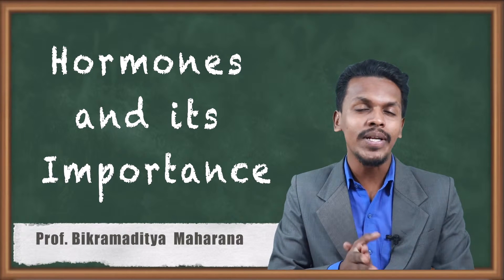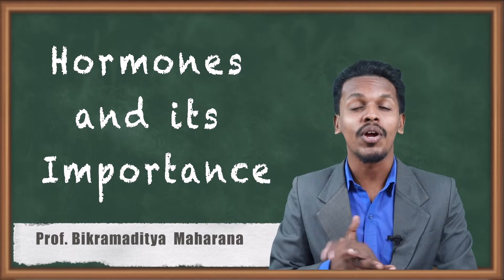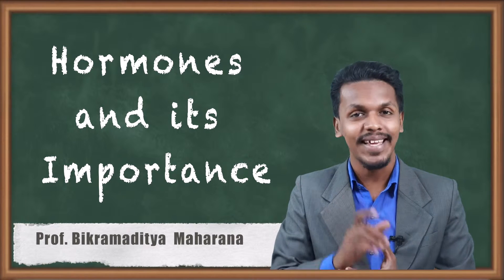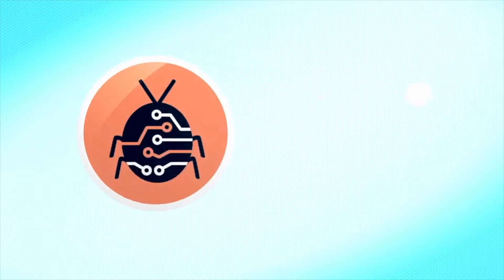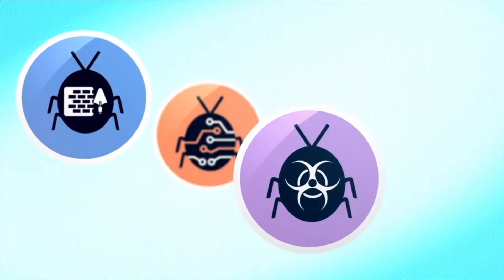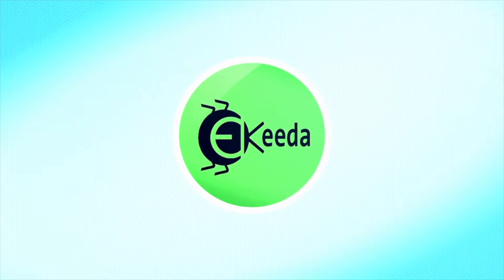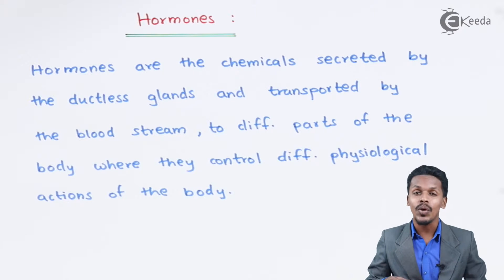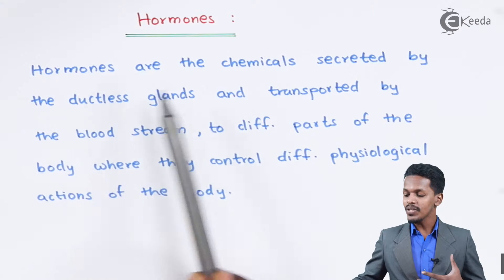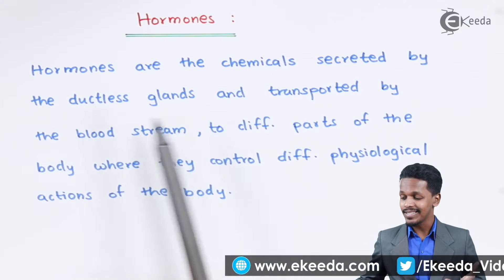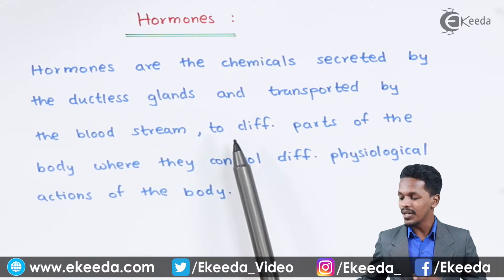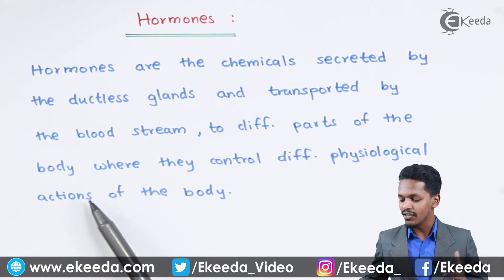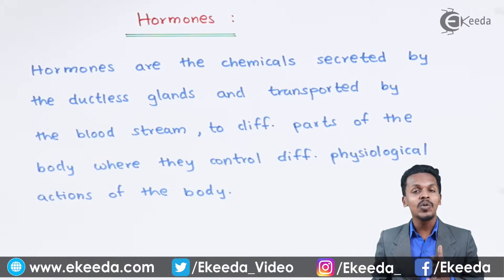Hello friends, in the previous topic we discussed about lipids, and now in this topic we are going to talk about hormones — what are hormones and what are their main functions. Hormones are chemicals secreted by the ductless glands and are transported by the bloodstream to different parts of the body, where they control different physiological actions of the body.